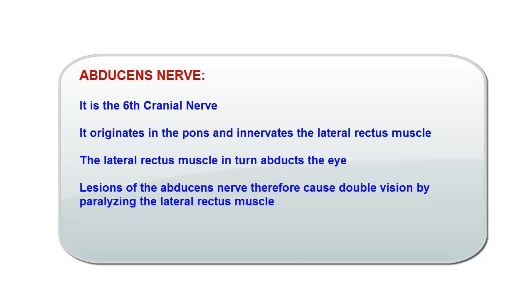For instance, if you ask a person to look to the right side and this person has a paralyzed right lateral rectus muscle, the person will experience double vision and the images will be horizontal to each other.